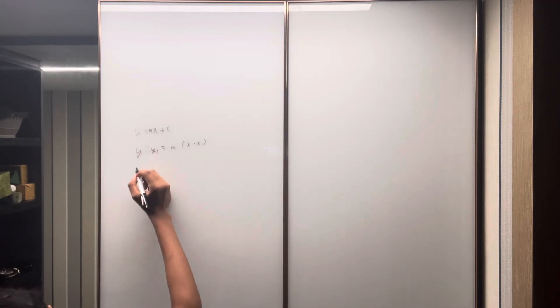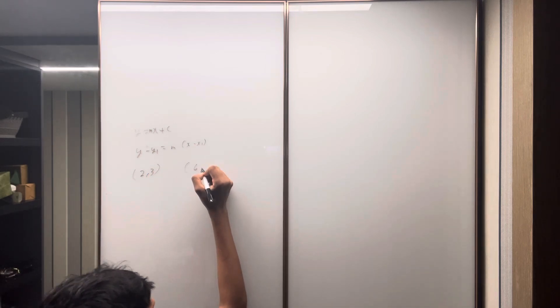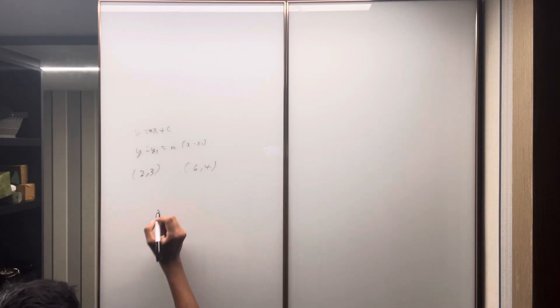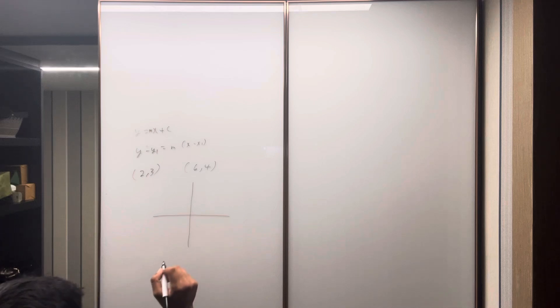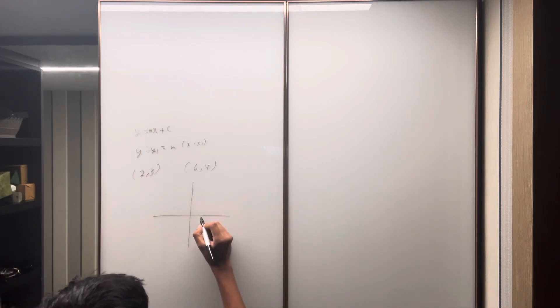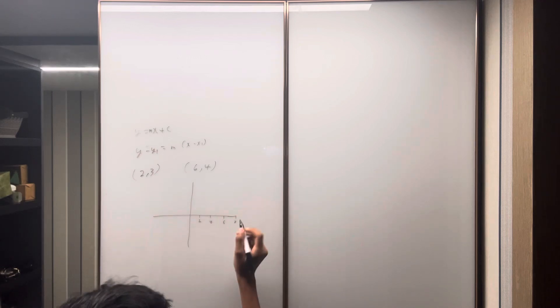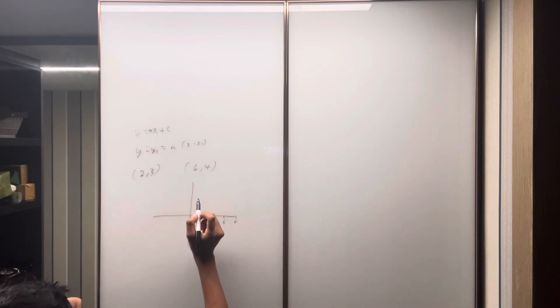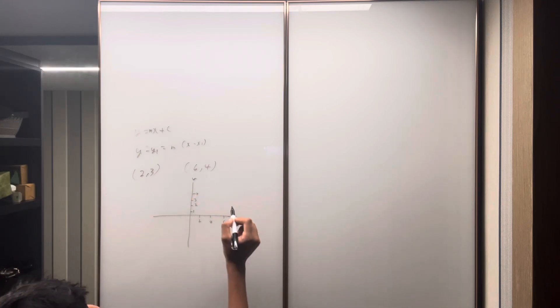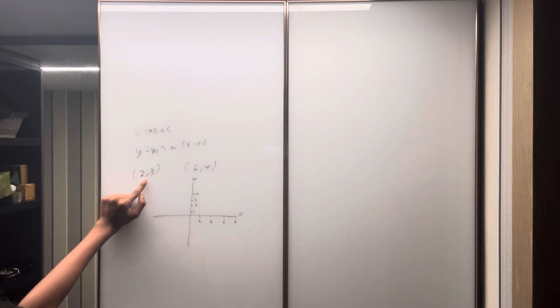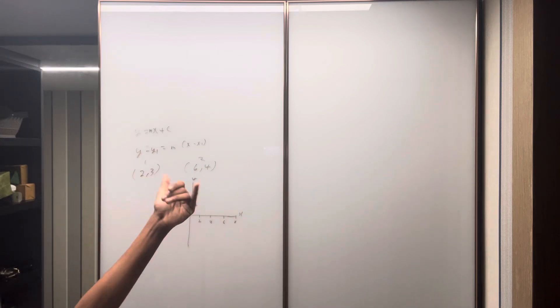Now suppose we have two values: 2 comma 3 and 6 comma 4. Let's just see that, right? Two and six. So two, four, six, eight. This is the next one for sure. Okay, so one value is three, four. So one, two, three, four.